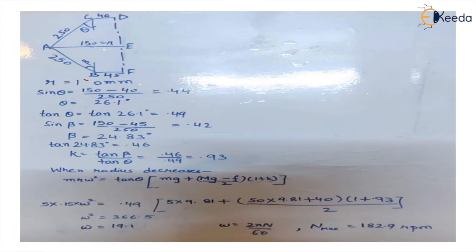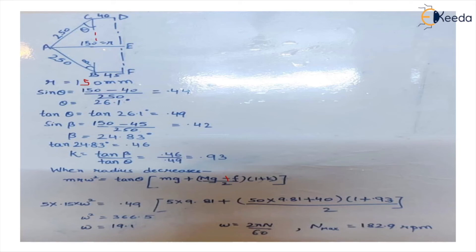For the maximum radius of 150 mm, the ball moves upward and the force of friction acts downward — in the same direction as the weight of the central load. So the formula changes to Mg plus F; the rest of the formula remains the same. Because the radius is different, the values of theta and beta will also differ. We make a similar construction, calculate theta and beta from the new triangle, find K, substitute into the equation, and get N maximum as 182.9 rpm.